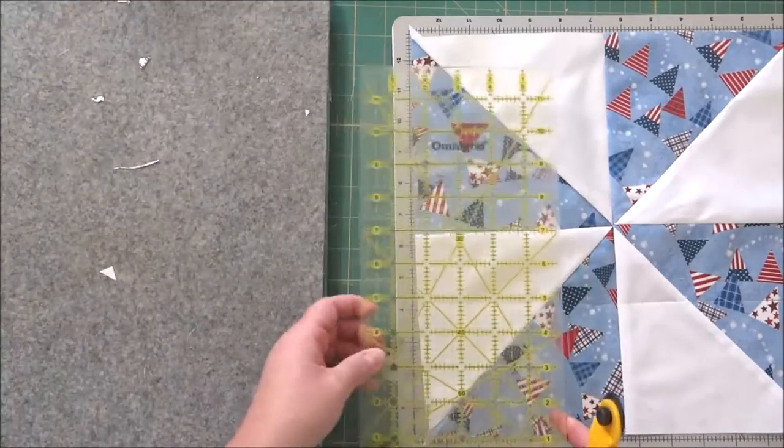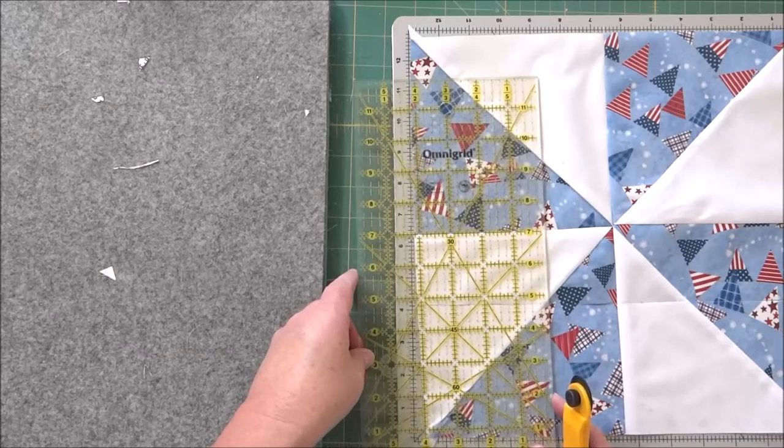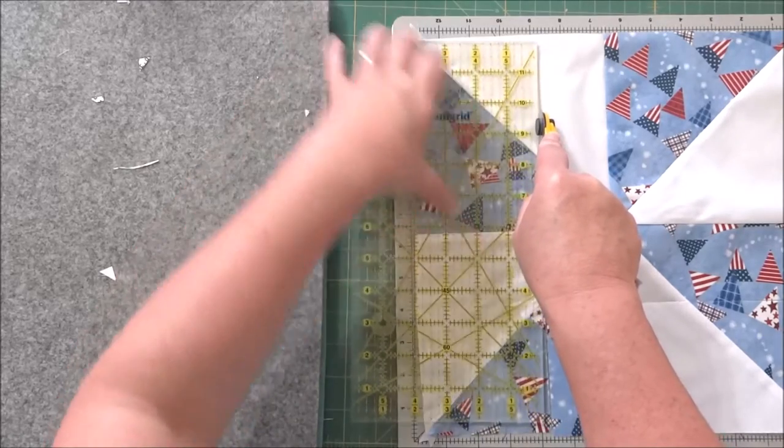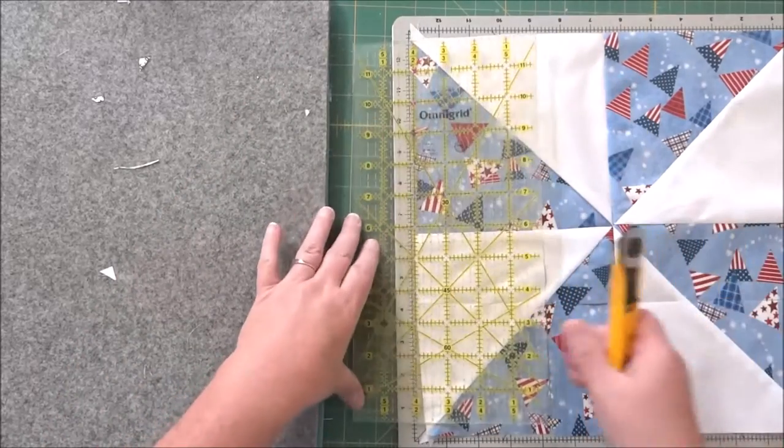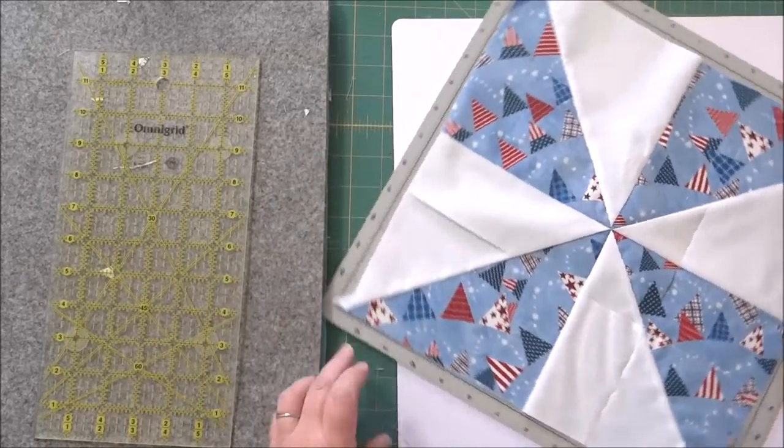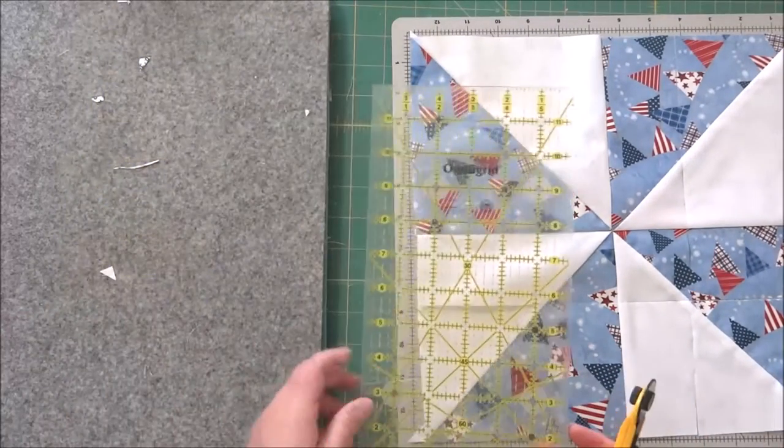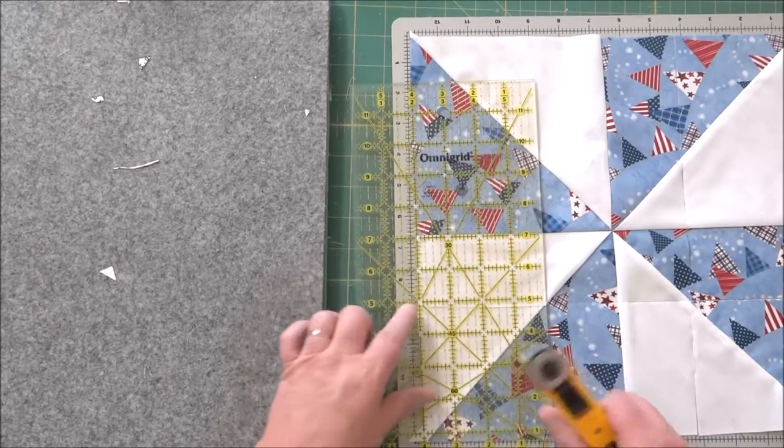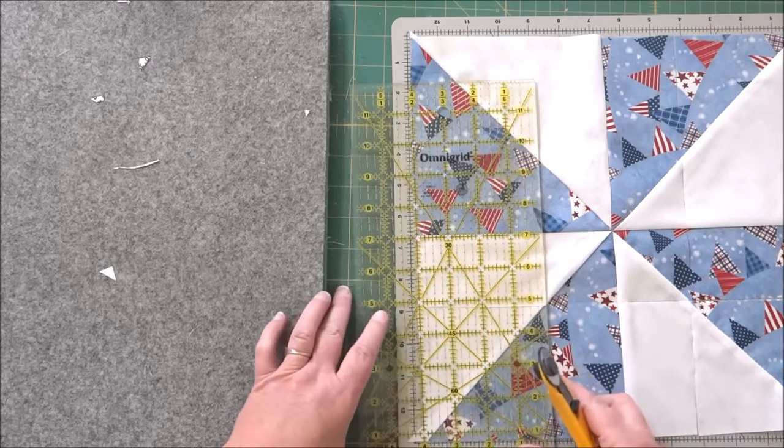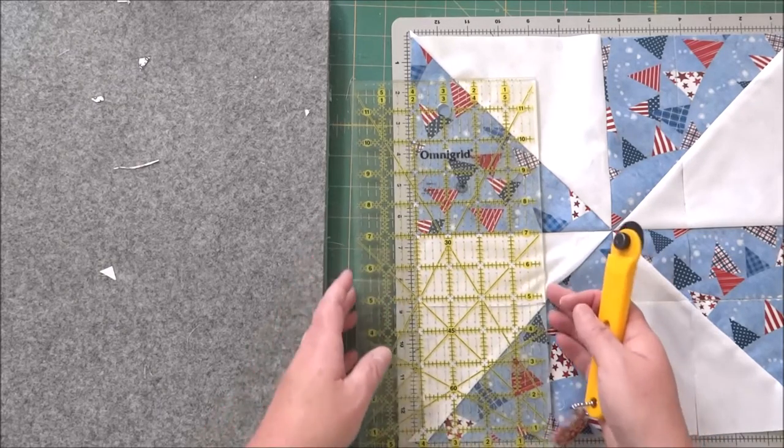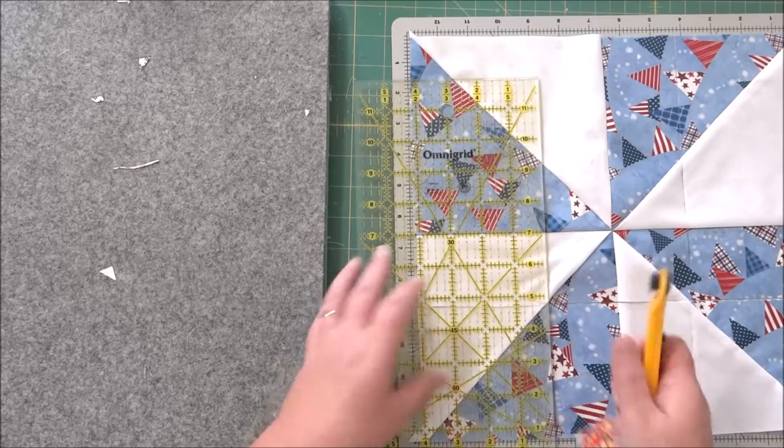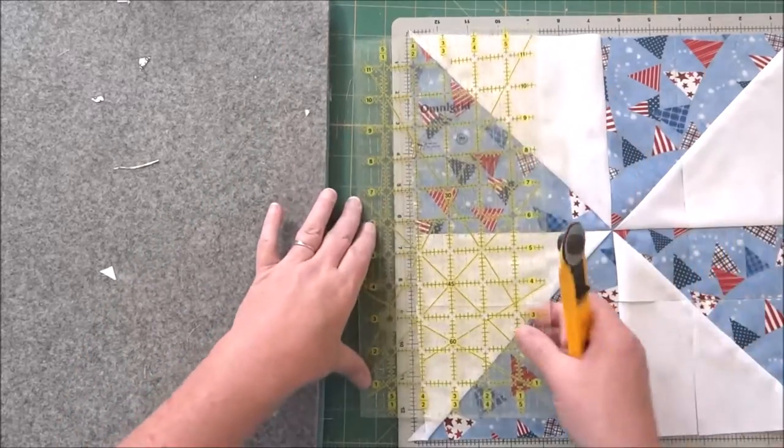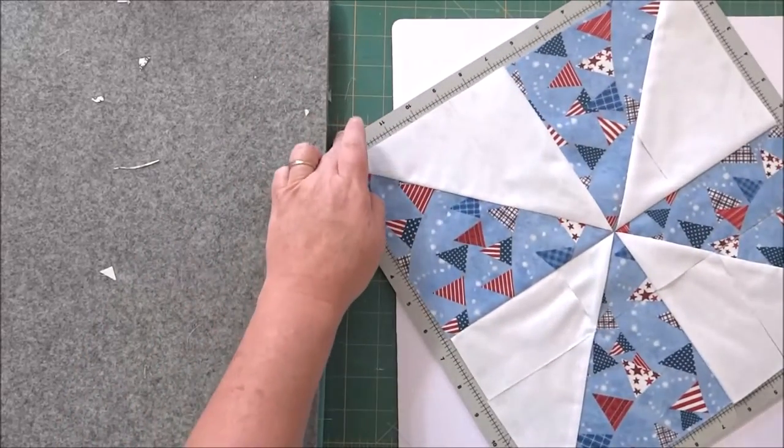I'm going to repeat the process for the next edge. Again, the measurement I'm using is four inches, so we're going to repeat this for all four sides of the block. If you want, you can line this up with the center seam to make sure that you don't have your ruler off or crooked.